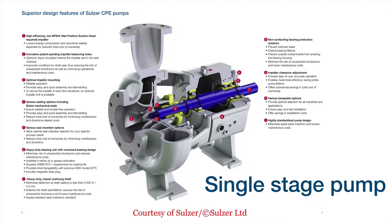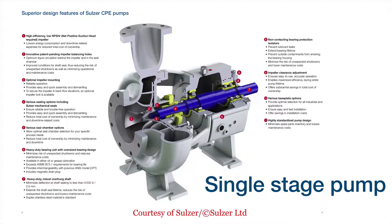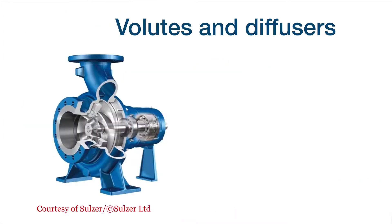Here we have the bearings supporting the rotating shaft. This is the bearing housing. Bearings can be lubricated with grease or with oil.